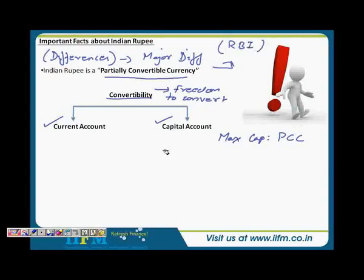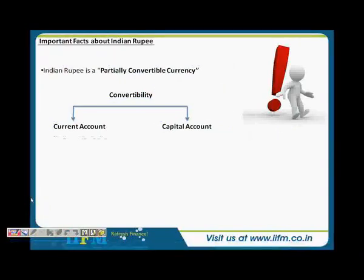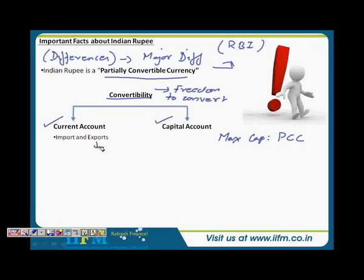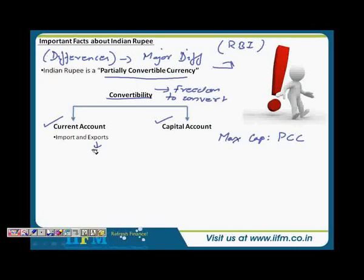Now we will study the current account and the capital account. The current account consists of imports and exports. For example, if you are exporting something to the US and you get dollars, your invoicing would be in dollars — you will be getting dollars for what you have sold abroad, and you will be converting those dollars into Indian rupees. This means you have full freedom to convert any number of dollars into rupees, because it comes under the segment of imports and exports.